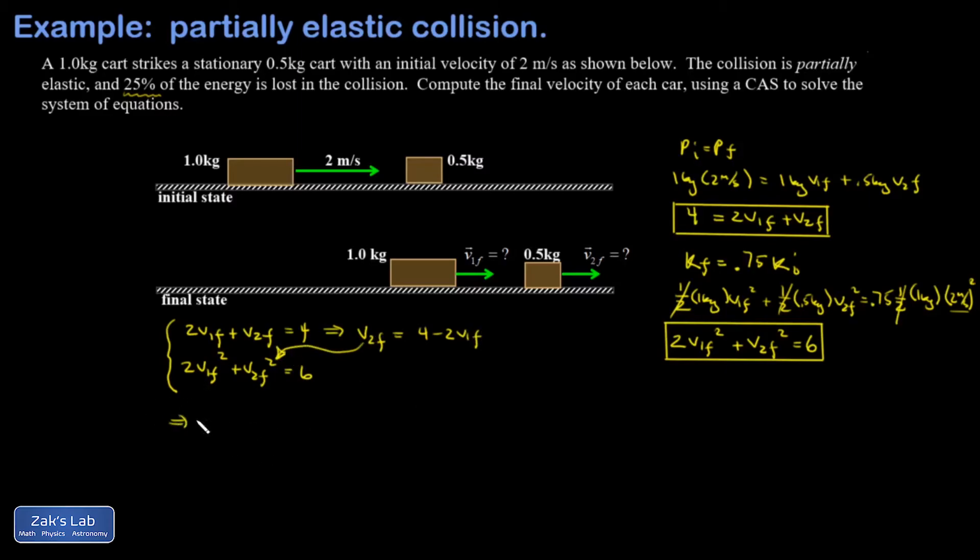When I do that, I get 2V1 final squared plus V2 final all squared. That's 4 minus 2V1 final all squared, which equals 6. Expanding that squared binomial using FOIL, I multiply the binomial by itself and get 16 minus 8 times V1 final for one cross term, then another one, so minus 16 V1 final, then plus 4 V1 final squared equals 6.